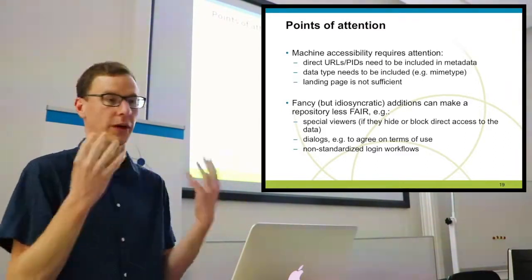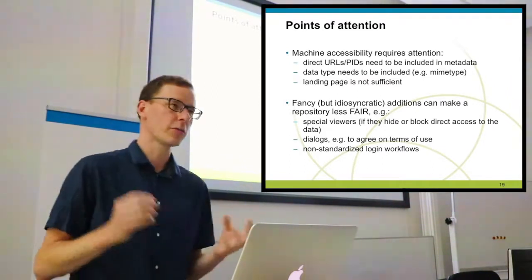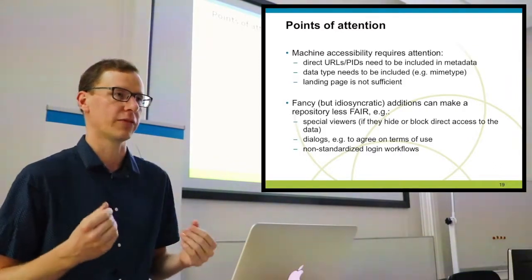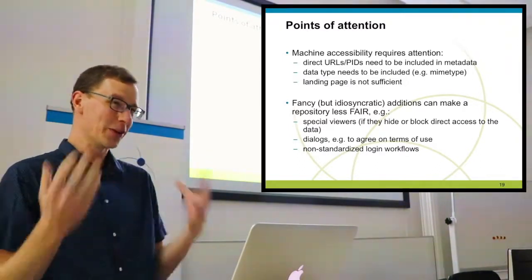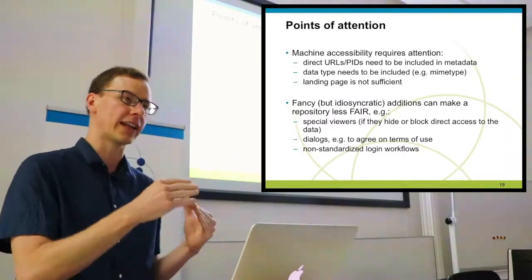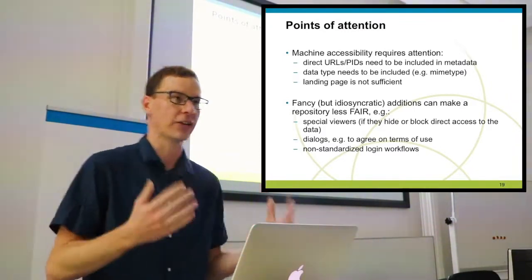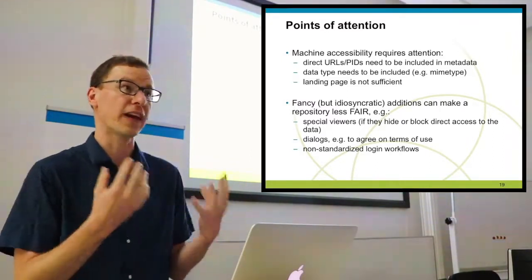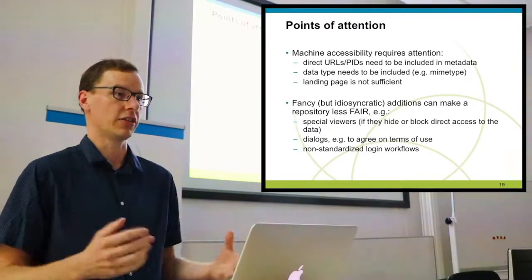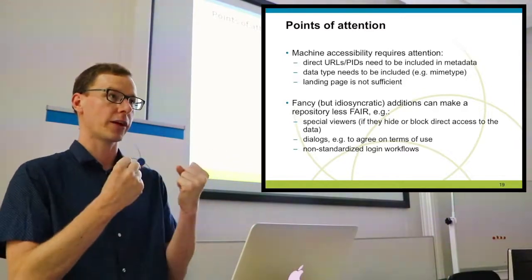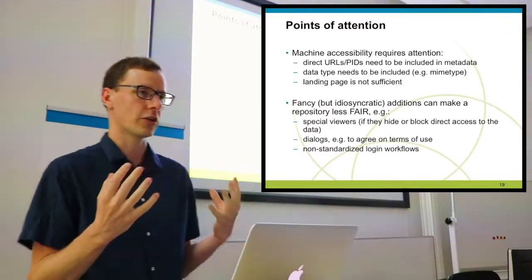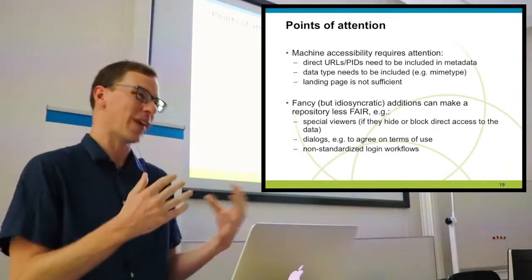All kinds of fancy but idiosyncratic additions can make a repository less FAIR. For instance, a specific viewer might be nice for a human user browsing a manuscript or OCR book, but these viewers often hide or block direct access to the data, making it less FAIR and less available for automated processing. Similarly, dialogues requiring you to agree with terms of use or a license — a user can click through, but a machine often cannot, blocking access and fairness.